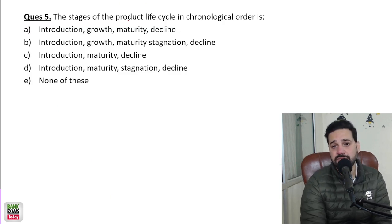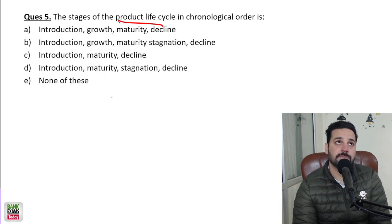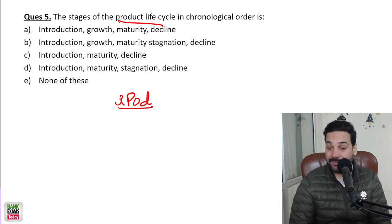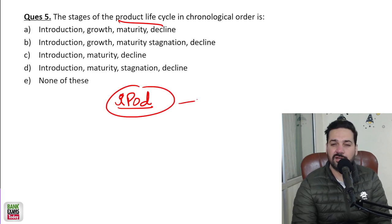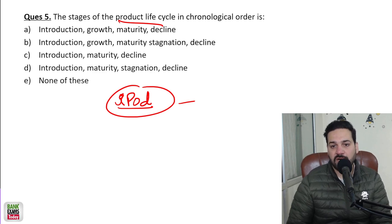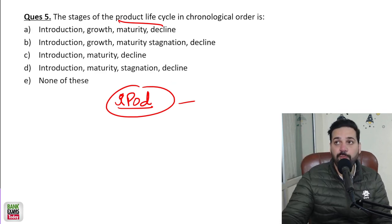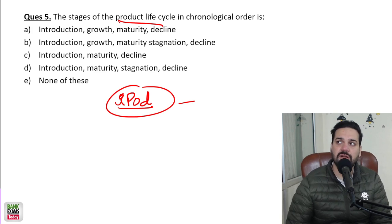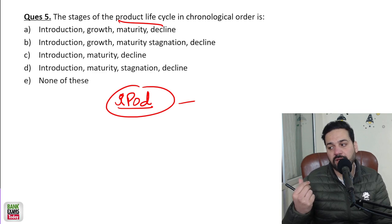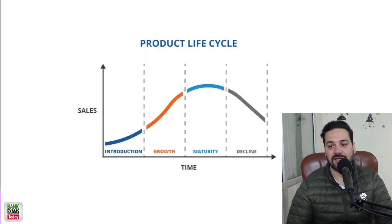The stages of the product life cycle — I can give you a good example. iPods — that's a good example. I hope a lot of you are aware of iPods; that was a landmark product of Apple. When it was launched in early 2000, 2001 or 2002, there was not much demand, but eventually demand increased. When the iPhone was introduced and got popular, the demand for iPods declined and eventually the product was discontinued. So iPod is a very amazing example to explain the product life cycle: introduction, growth, maturity, stagnation, and then decline.